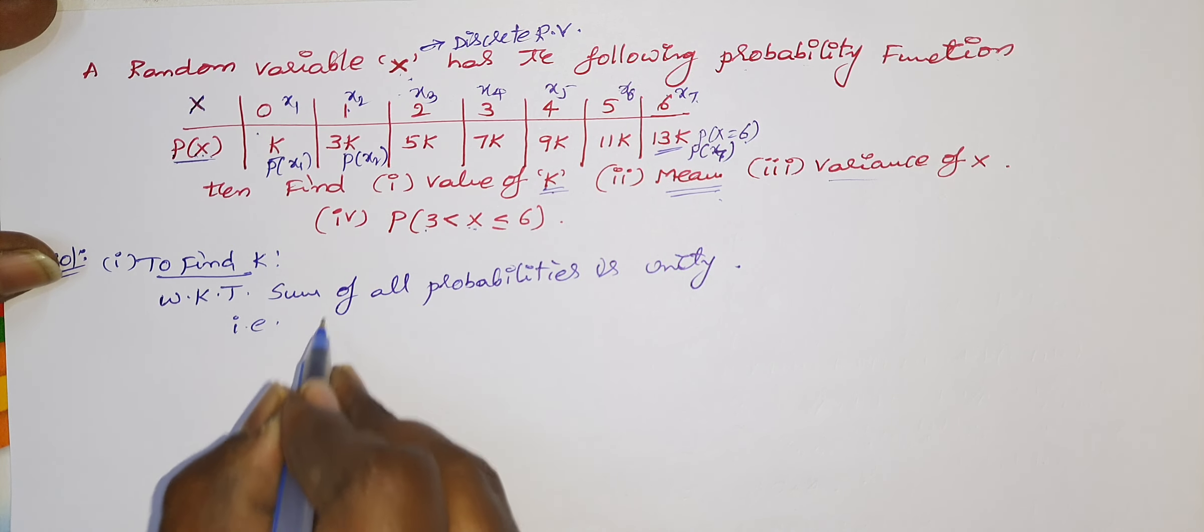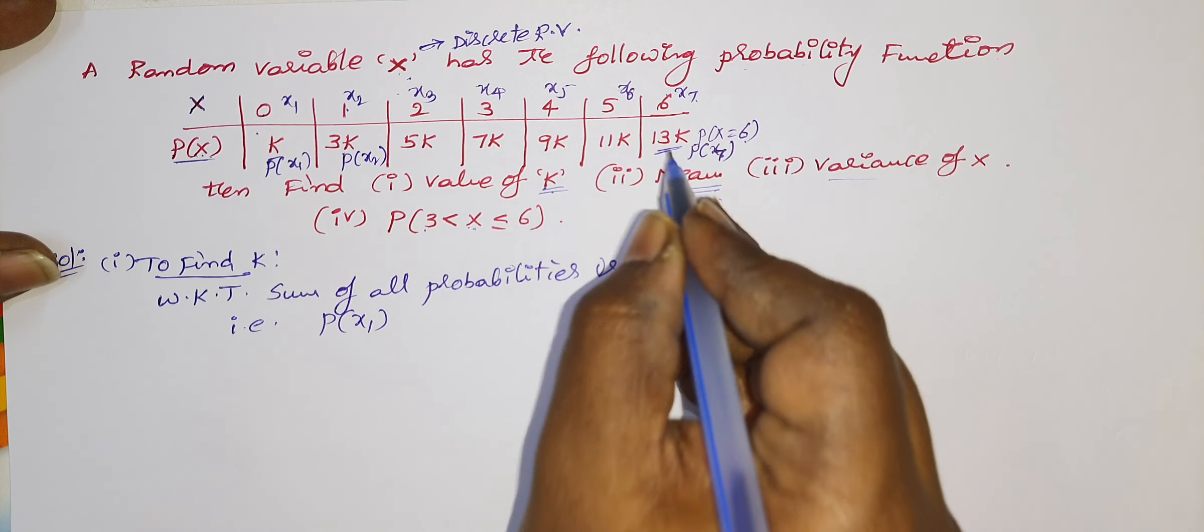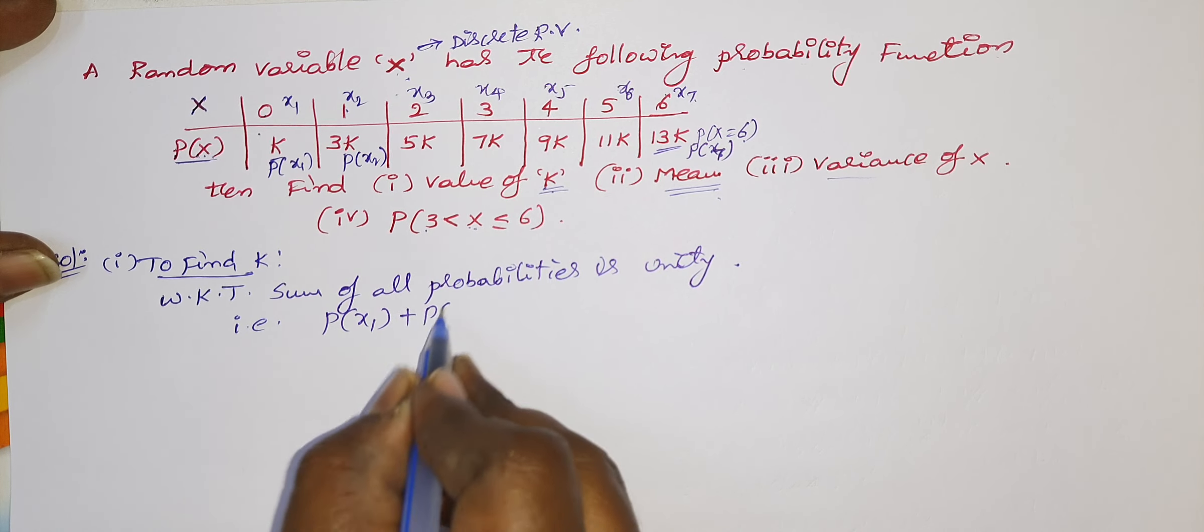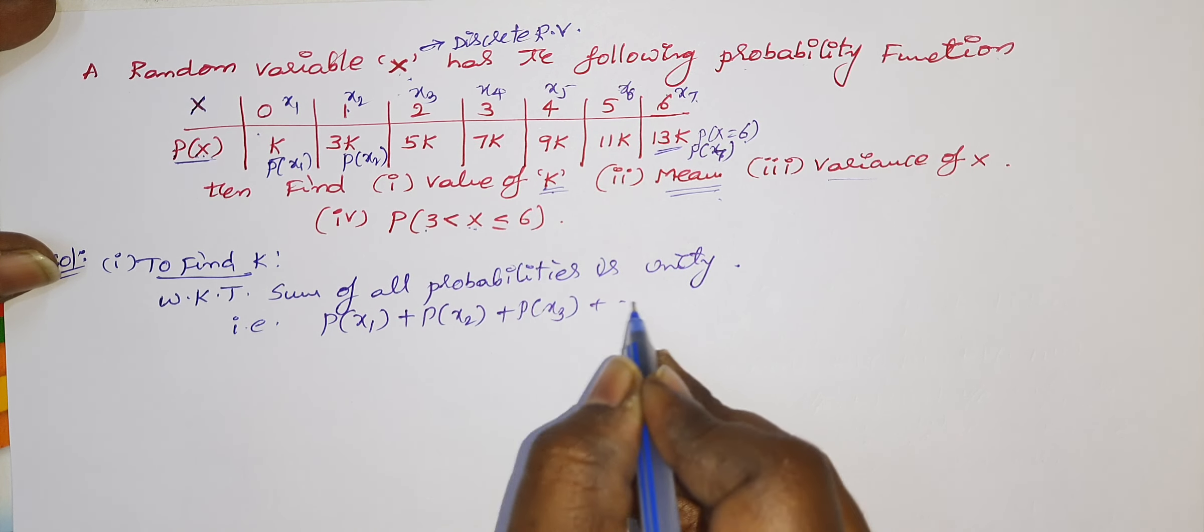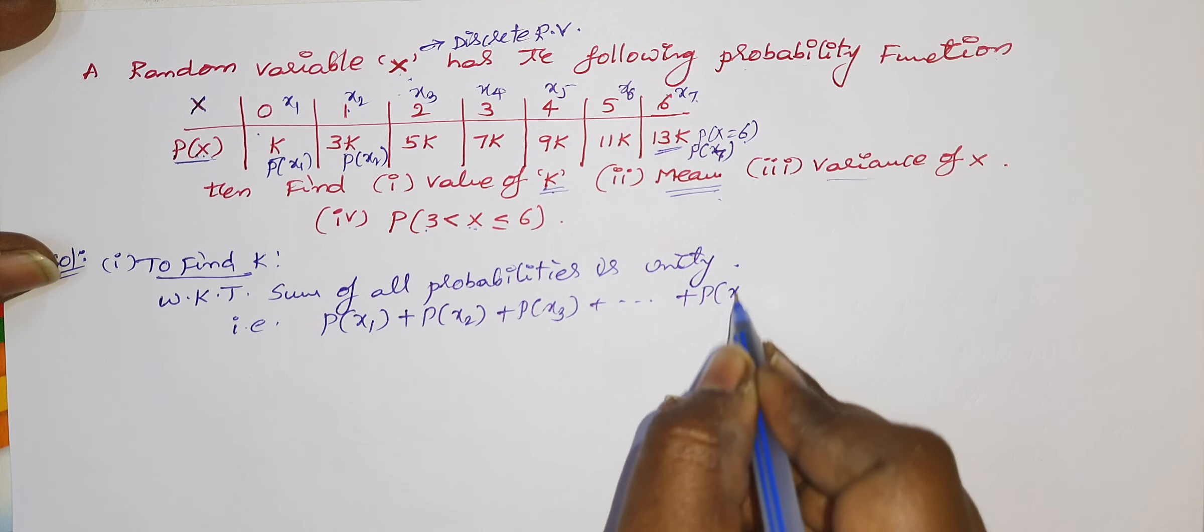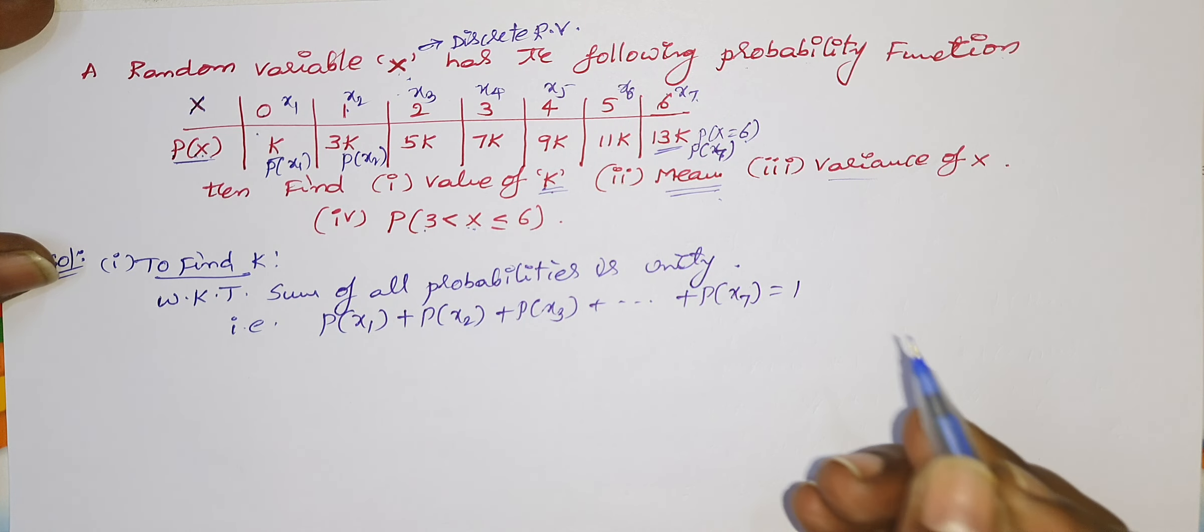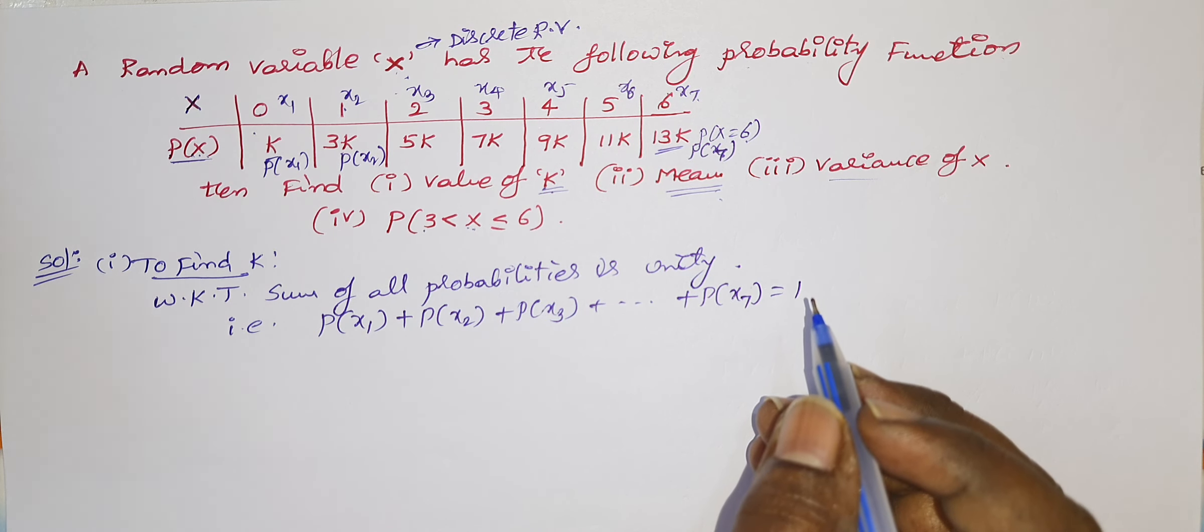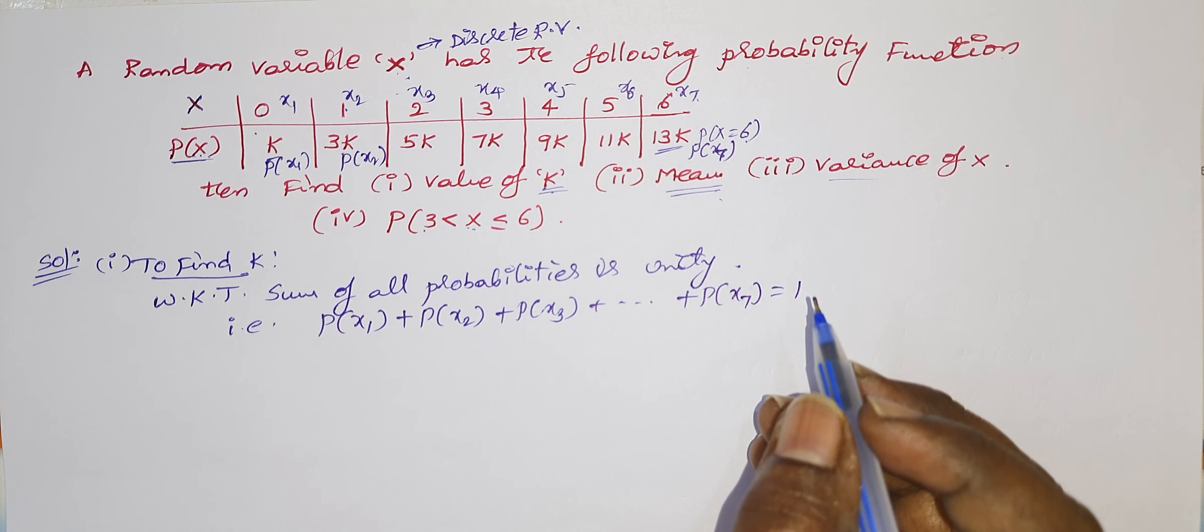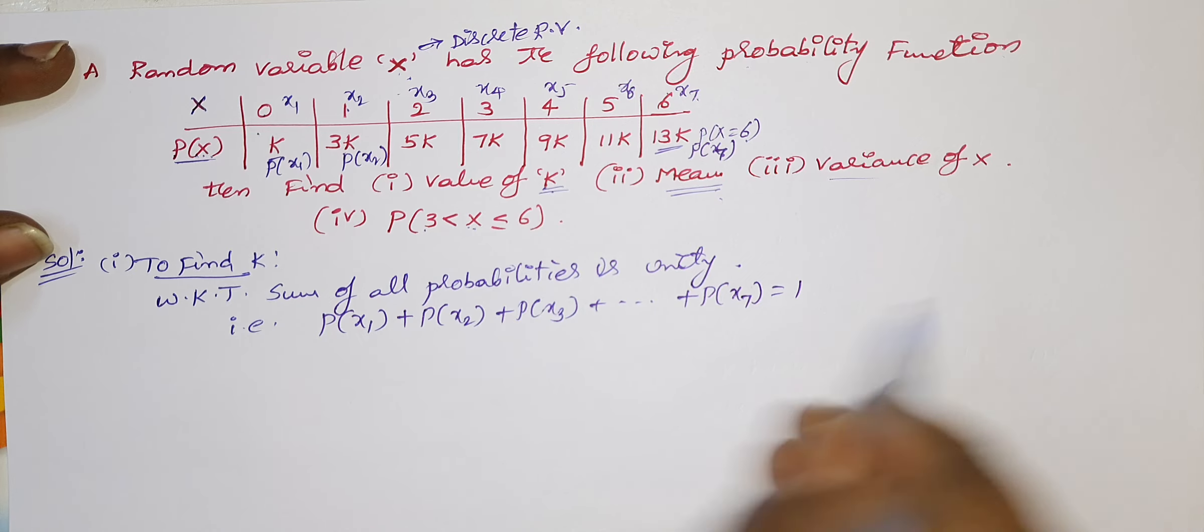How to find the k value in the concept of discrete random variable? We know that the basic concept in the total probability is sum of all probabilities, otherwise total of all probabilities is unity, nothing but it is 1. That is, here we have the probabilities from x1 to x7. Suppose you can take any random experiment and you can take any events. If you find out probabilities of all events, surely you will get 1.